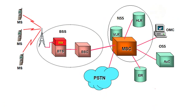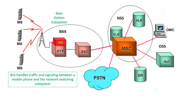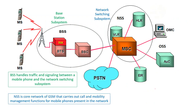Now we are going to learn BSS, NSS, and OSS. BSS is the Base Station Subsystem. BSS handles traffic and signaling between a mobile phone and the network switching subsystem. BSS has two components: one is BTS and second is BSC. Next is NSS — Network Switching Subsystem — which is the core network of GSM that carries out call and mobility management functions for mobile phones present in the network. NSS has components like VLR, HLR, AUC, and EIR.